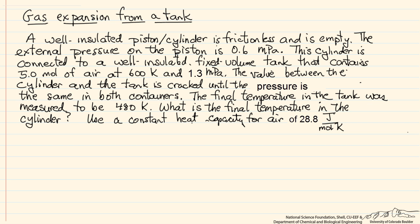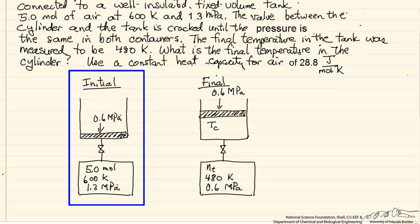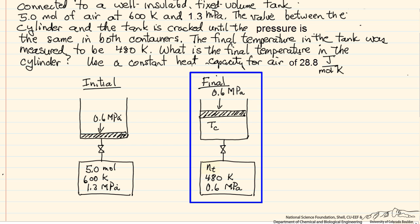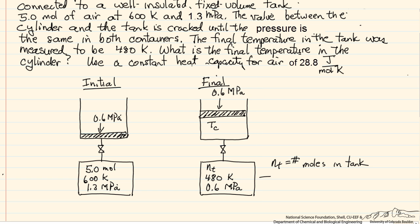The first thing we want to do is draw a diagram to represent the system. On the left, the cylinder-piston arrangement is empty and we have the gas in our tank. At a later time, we have fewer moles in the tank. The pressure is the same in both containers since the valve equalizes them. We've measured the temperature in the tank as 480 K; what we don't know is the temperature in the piston and cylinder — this is what we want to calculate.